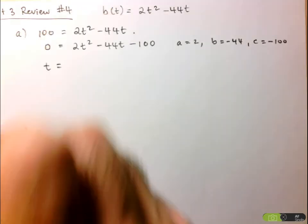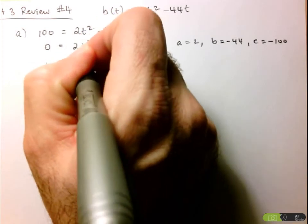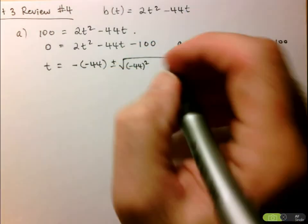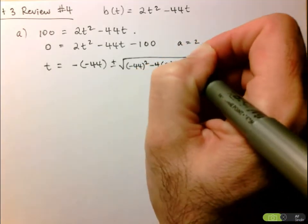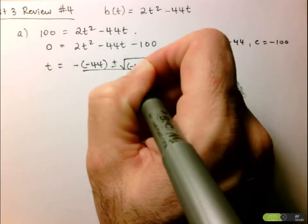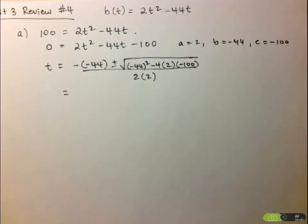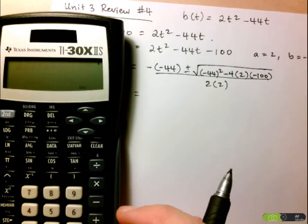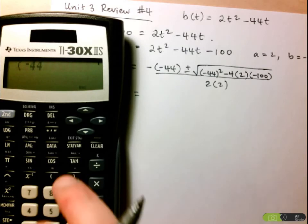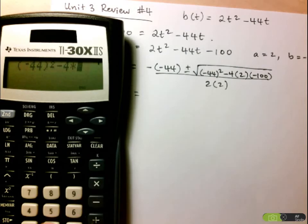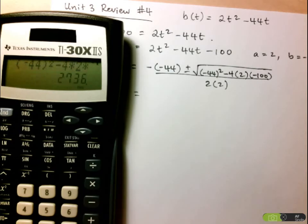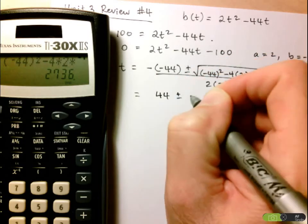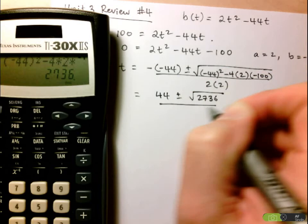Let's solve for t using the quadratic formula: negative of negative 44, plus or minus the square root of negative 44 squared minus 4 times A (which is 2) and C (which is negative 100), all over 2 times 2. I'll calculate the interior of the square root first: negative 44 squared minus 4 times 2 times negative 100, which gives us 2736. So this becomes positive 44, plus or minus square root of 2736, all over 4.